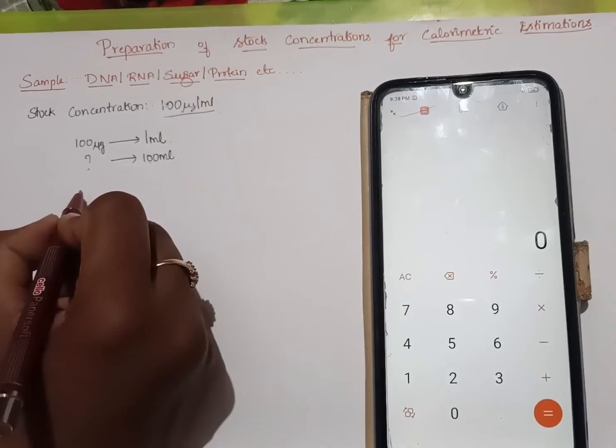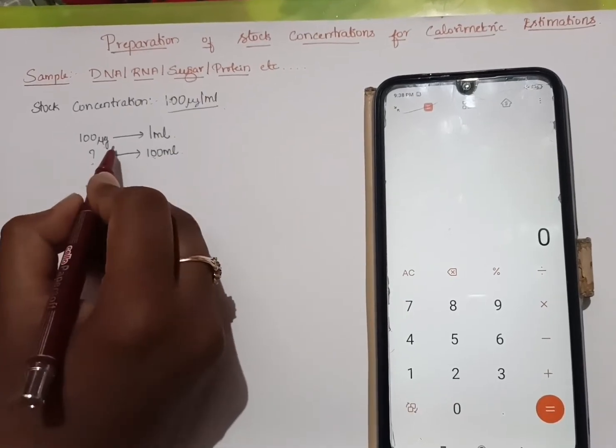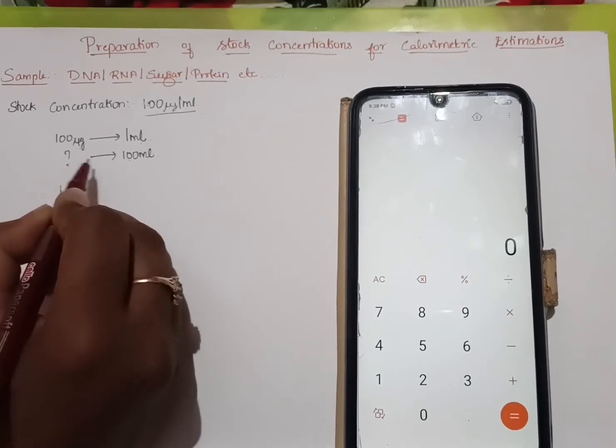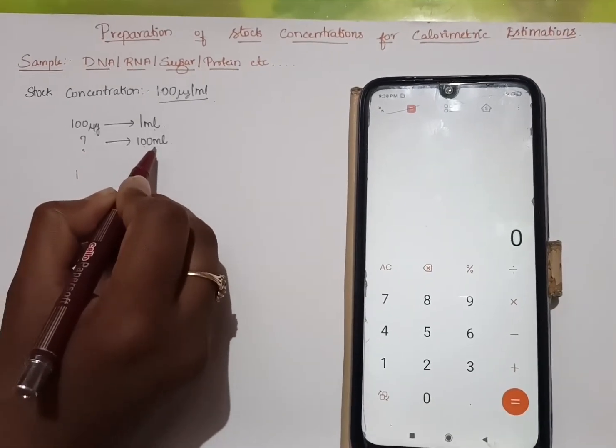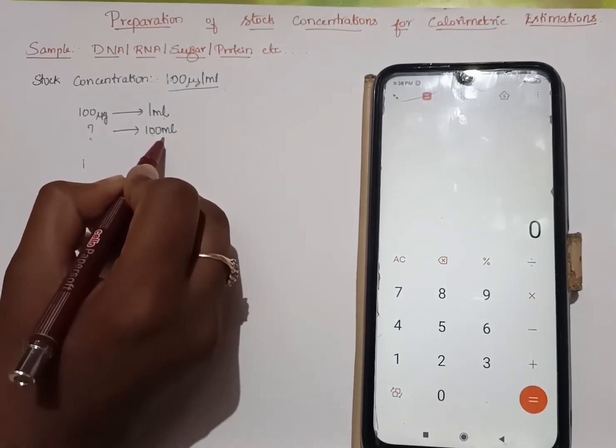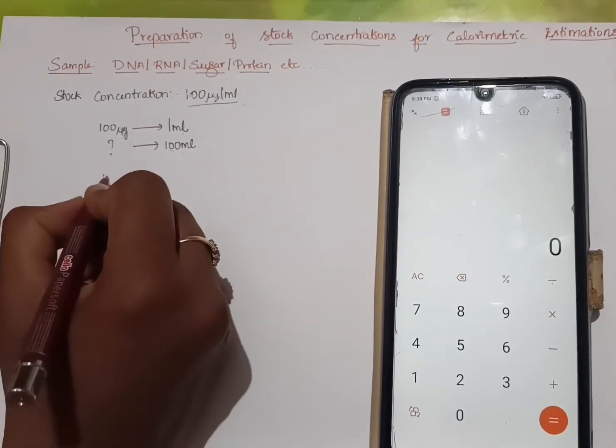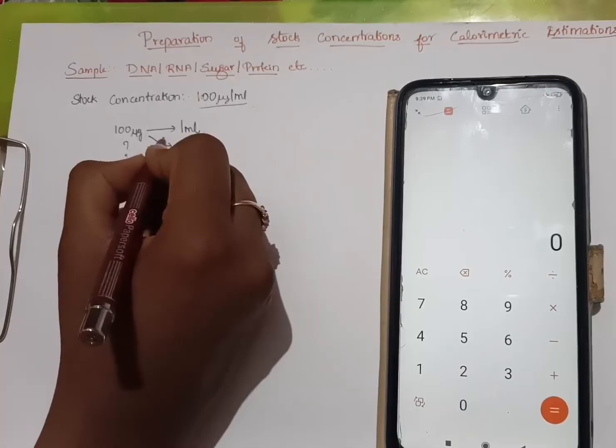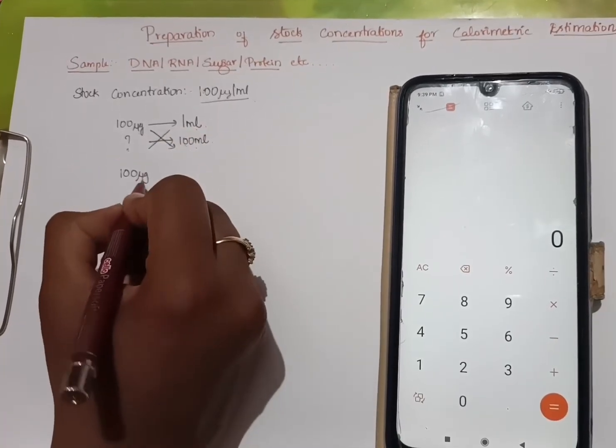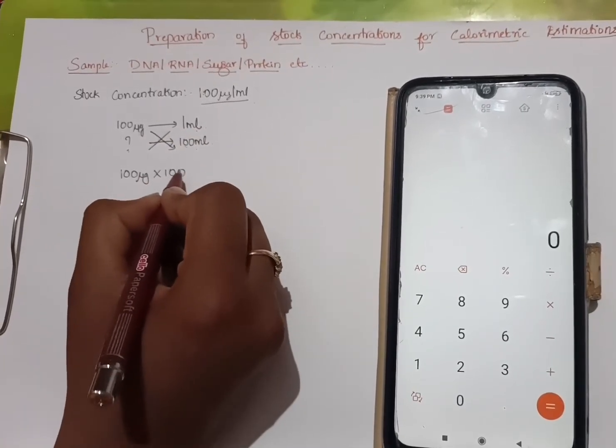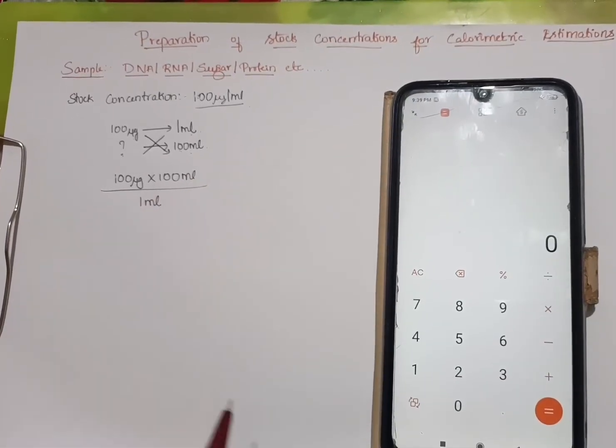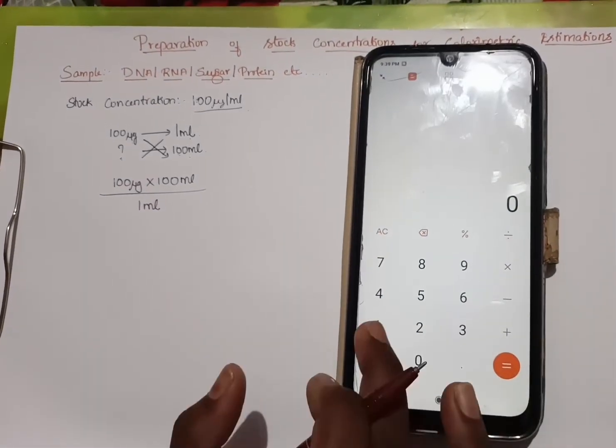If 100 microgram is present in 1 ml, then how many micrograms should I add in 100 ml of water is what I am going to find out. It's a cross multiplication: 100 micrograms into 100 ml divided by 1 ml is what I will be doing. So let us see how to perform this.